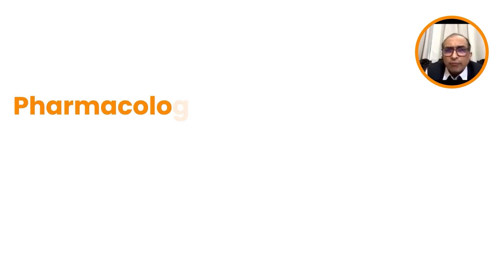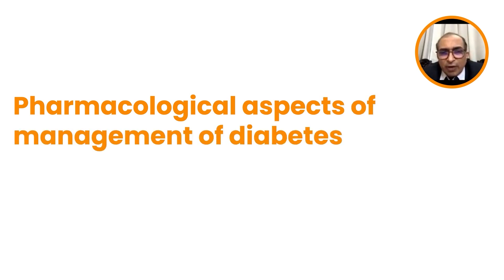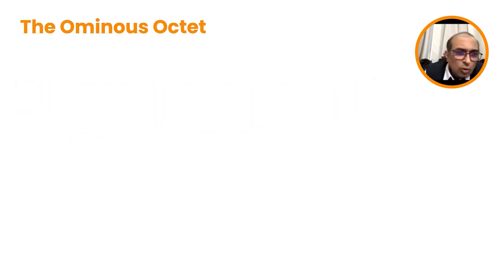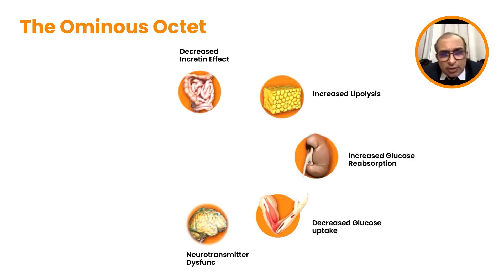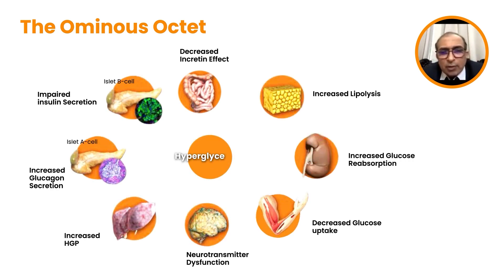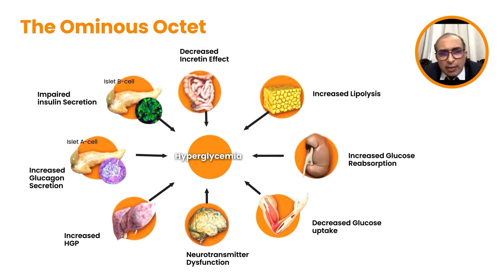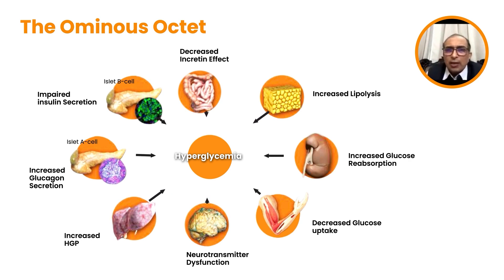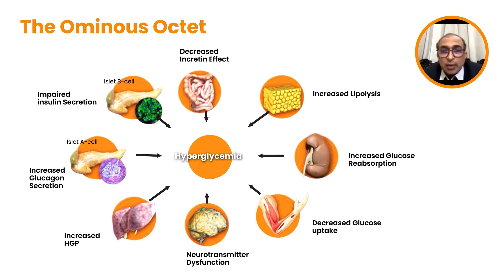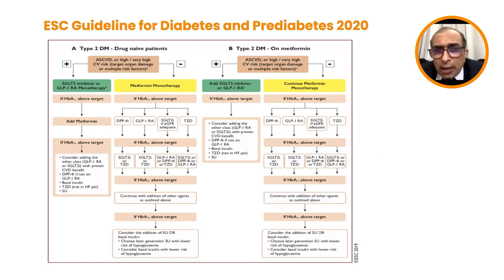Moving to the pharmacological aspects of diabetes management — the 'ominous octet' describes that not only insulin secretory defects and insulin resistance are important, but also other factors like the incretin defect, addressed by DPP-4 inhibitors or GLP-1 analogs, and increased glucose reabsorption in the kidney, addressed by SGLT-2 inhibitors. We have eight different contributing mechanisms, and using agents that address more than one, or combining agents targeting different pathophysiological abnormalities, may provide the best benefit.